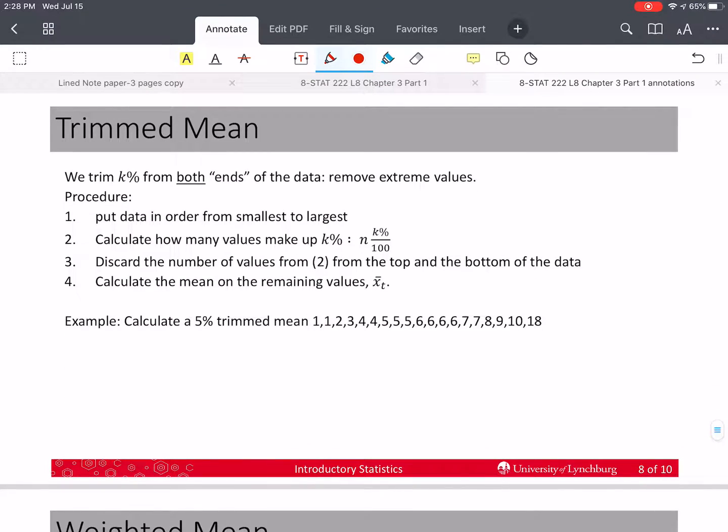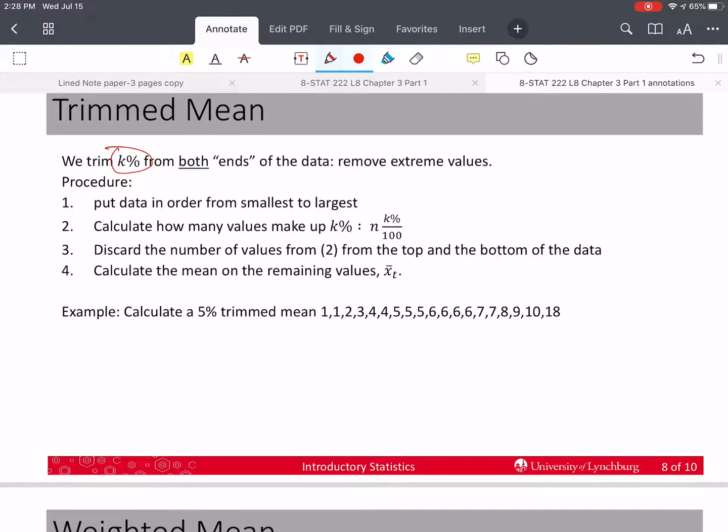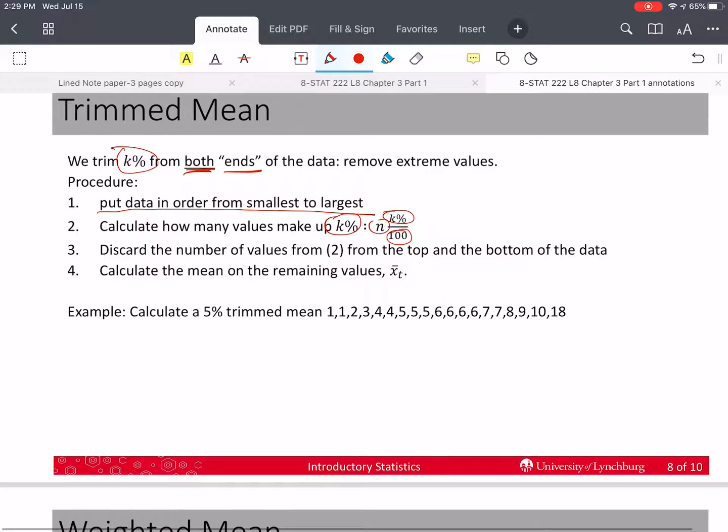Now, let's look at a modification of the mean. In those situations where we may have some extreme values, and we still want to use the mean, we may use what we call the trimmed mean. We're going to trim k percent of the values from both ends of the data. In other words, we have to put the data in order, from smallest to largest. We need to calculate k percent of the values. We do that by taking the k percent, divided by 100, and times n. Then we're going to discard that number of values from both the top and the bottom. Let's calculate the mean, and then we calculate the mean on the remaining values. We just pretend like those other values we threw out don't exist.